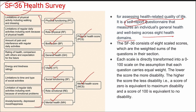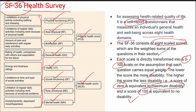SF-36 consists of eight scaled scores which are weighted sums of questionnaire items in their sections, and each scale is directly transformed into a 0 to 100 scale based on the assumption that each question carries equal weight. The lower the score, the more the disability; the higher the score, the lesser the disability. A score of 0 equals maximum disability and a score of 100 is equivalent to no disability.